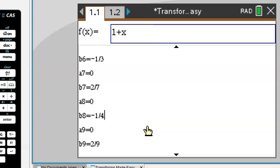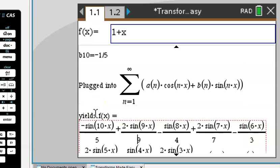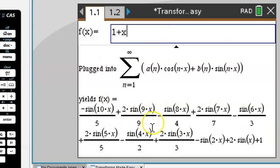Moving forward. Scrolling down, you see how all the coefficients are found, and if we scroll down all the way to the bottom, we see the Fourier Series of our given function 1 plus x.